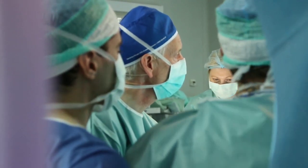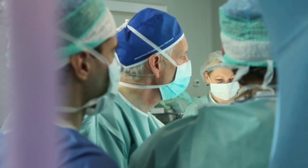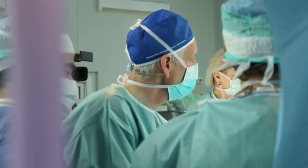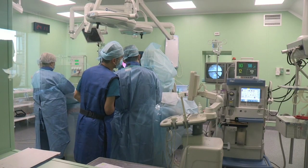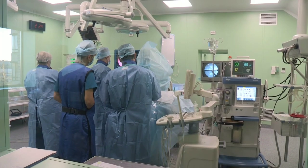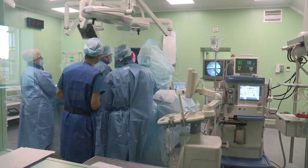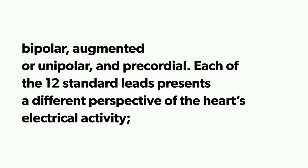ECG units consist of the ECG unit, electrodes, and cables. The 12-lead system includes three different types of leads: bipolar, augmented, and unipolar or precordial.